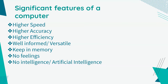The next feature I'm going to talk about is higher accuracy. Accuracy is an important feature of computers. Any type of task or calculation performed by a computer is correct. The computer is programmed in such a way that computers can never make a mistake. This is the reason that people rely on computer accuracy, and computers are being used everywhere because of this.